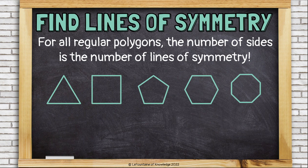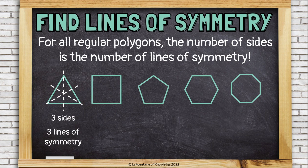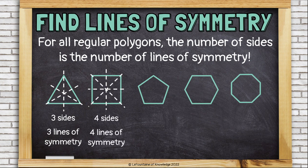For all regular polygons, the number of sides is the number of lines of symmetry. So for that regular triangle, it has three sides, which means it also has three lines of symmetry. A square is a regular polygon with four sides, so it has four lines of symmetry. This regular pentagon has five sides, so it's going to have five lines of symmetry.